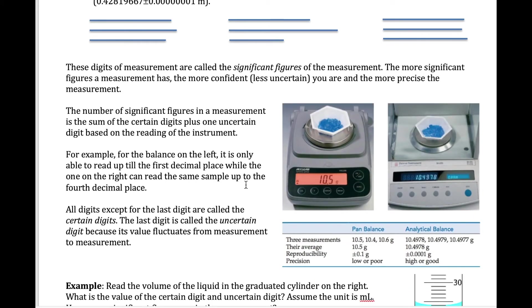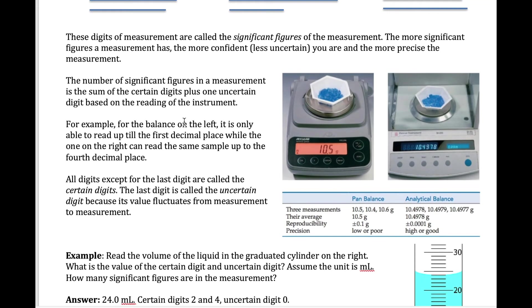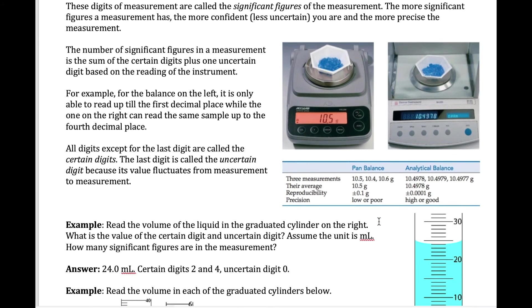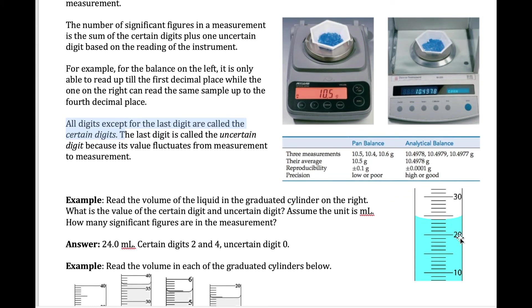Many instruments are digital and simply display a number, but some require you to read and interpret markings. Graduated cylinders and burettes are examples of such instruments. The way you read them is to read all the digits you can see from the marks themselves, and then add one more digit — the uncertain digit — which is your estimate of where the actual value falls between the marks.